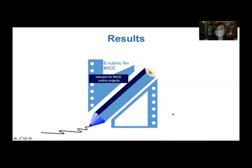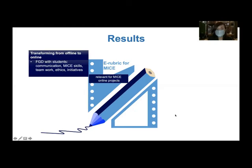The result of this research is electronic rubric which is relevant for online project, tailored for online activities for webinars and exhibitions. In this focus group discussion, we gained ideas from the students. They said that some criteria needed for evaluation in MICE class is communication skills for conducting or performing MICE activities. They also mentioned that teamwork, ethics, and taking initiative is important.